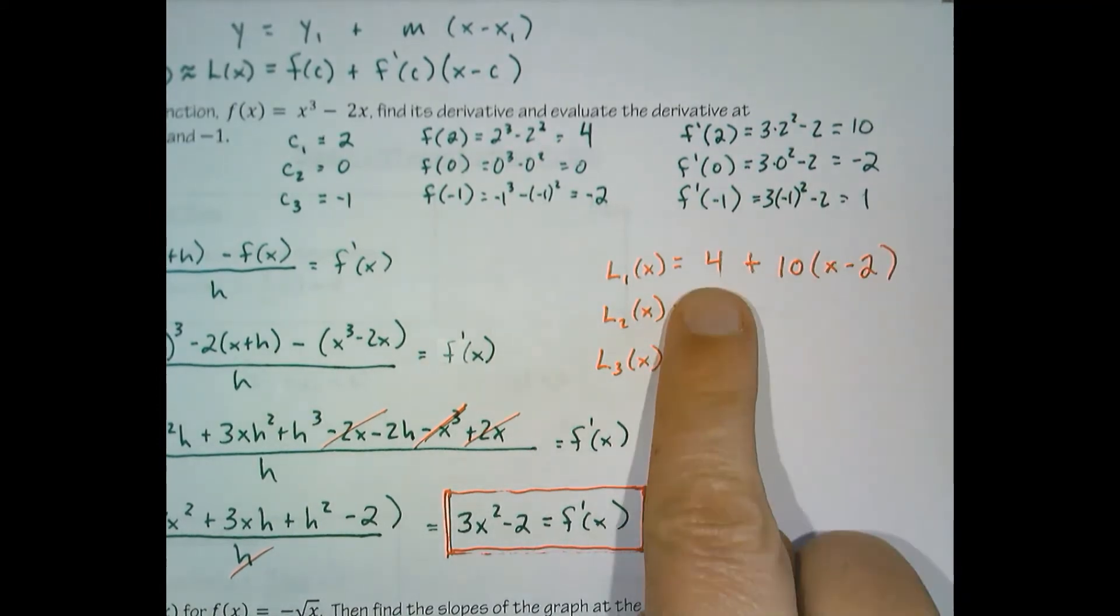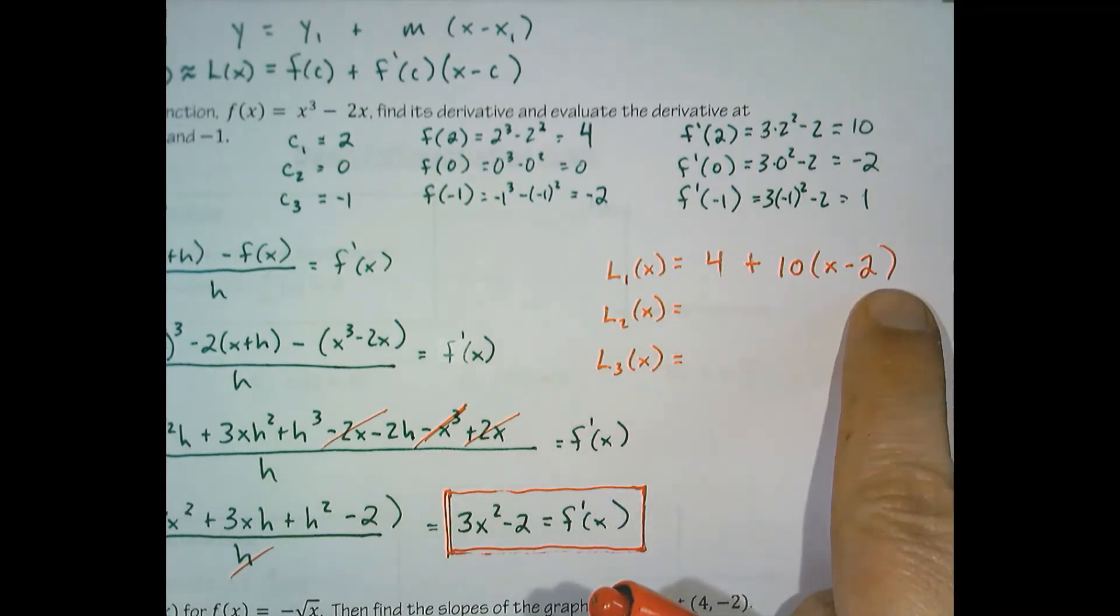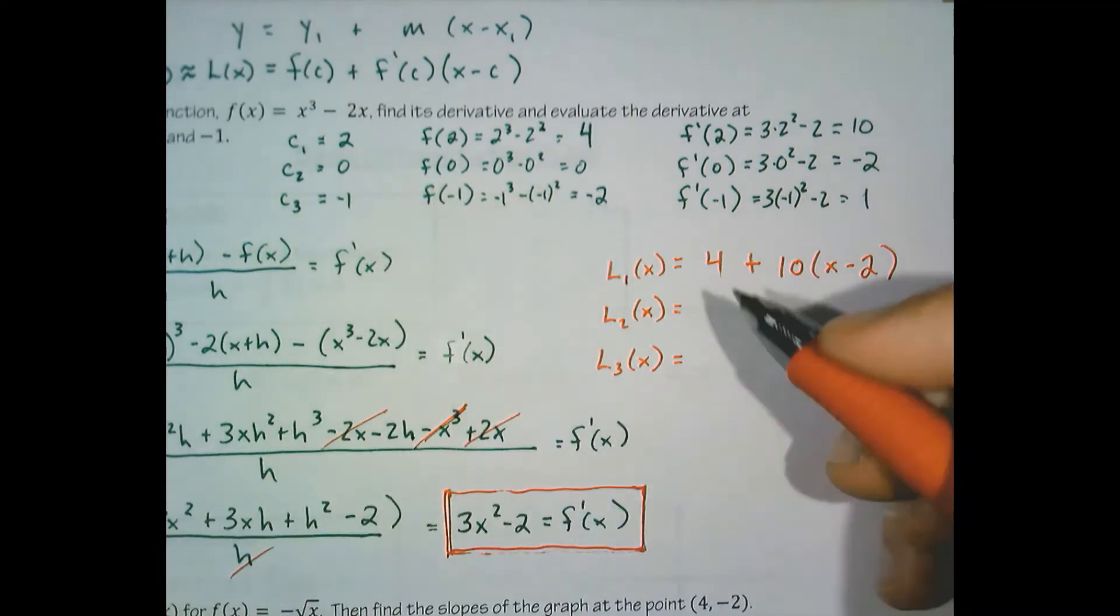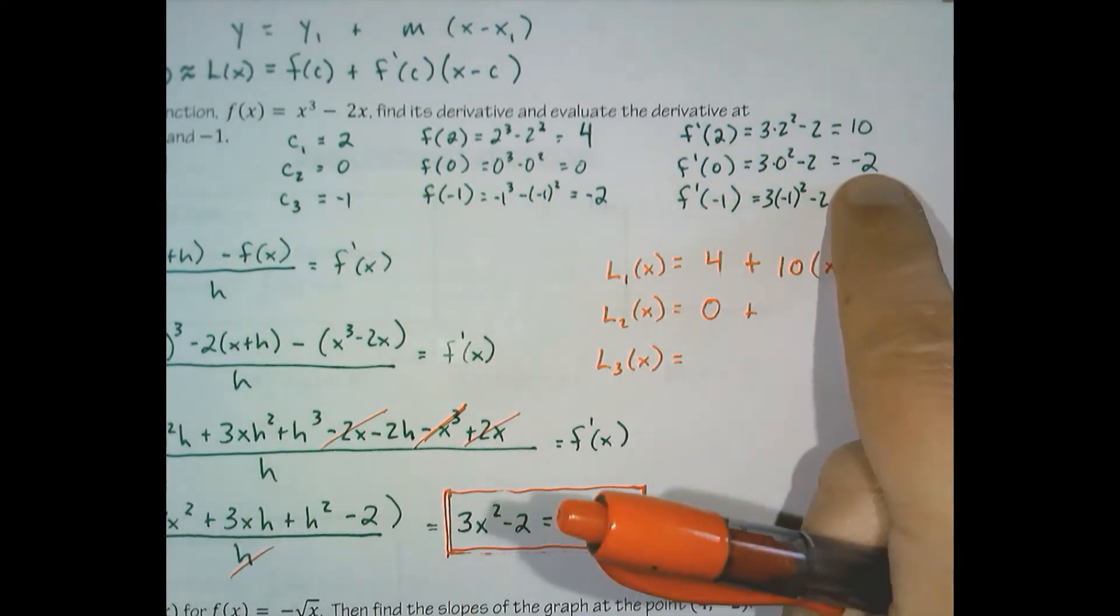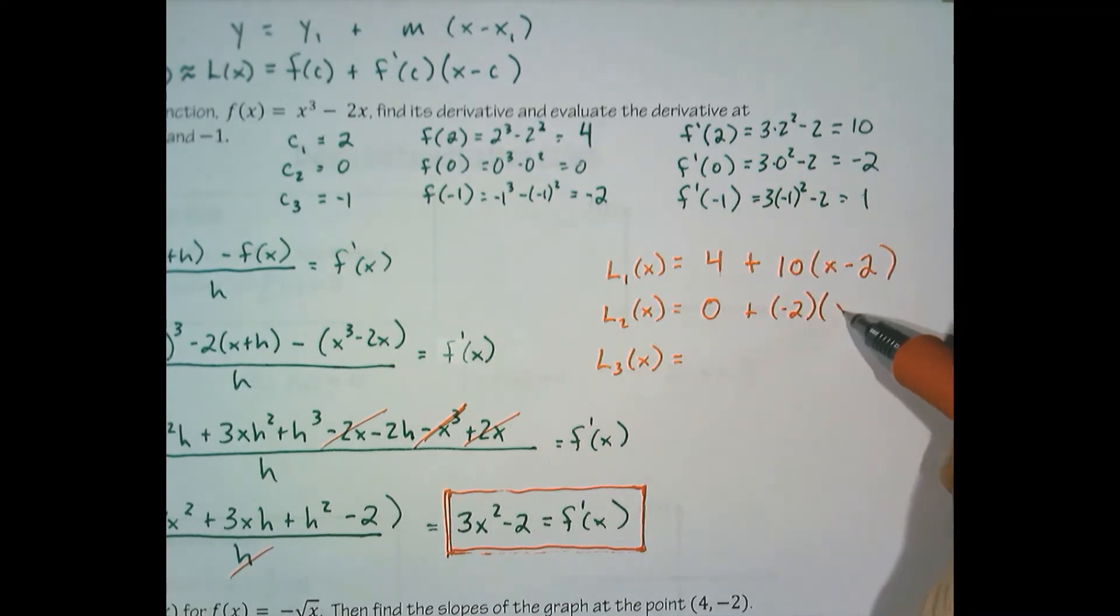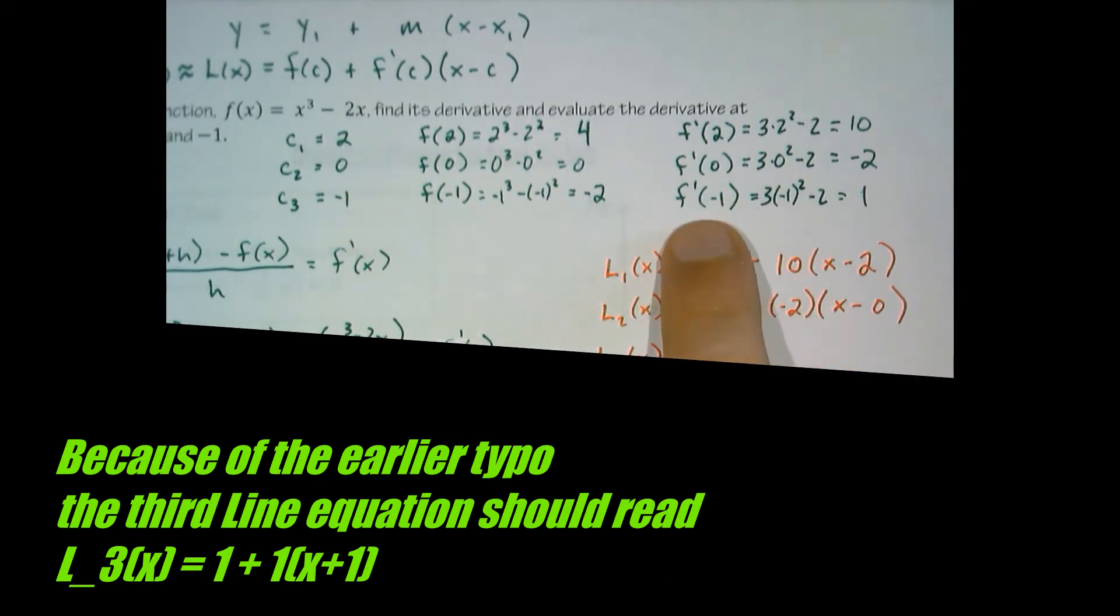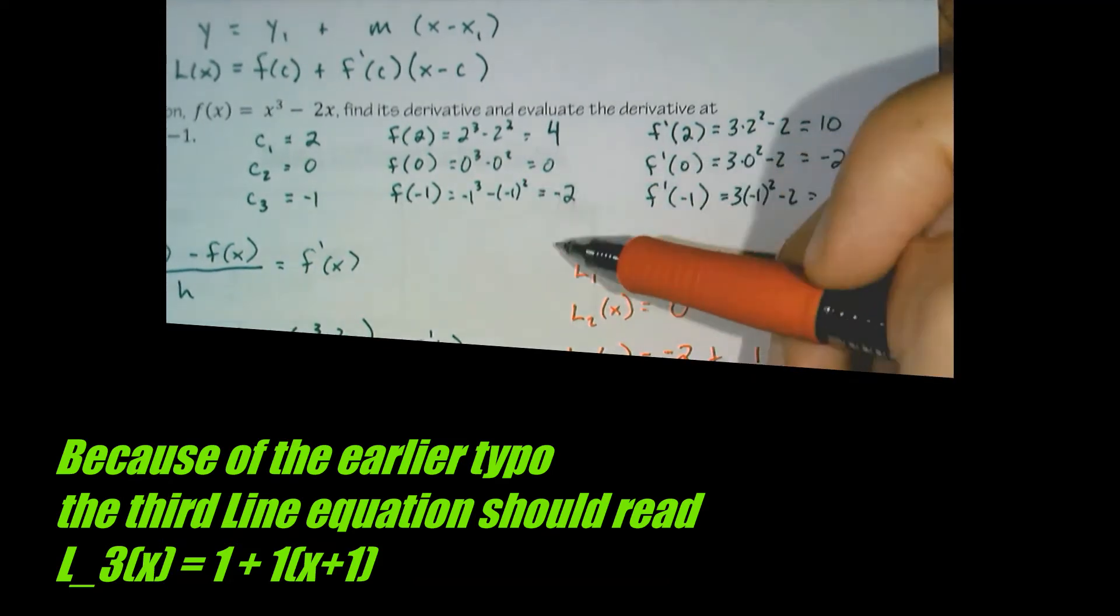So f of c plus f prime of c times x minus c. We go down the line and continue to do that for each center. The center here of zero, f of zero is zero, f prime of zero is negative two, and x minus zero. And then finally, on the third one, our center was at negative one, so f of the center is negative two, plus f prime of the center is one, and then x minus the center.